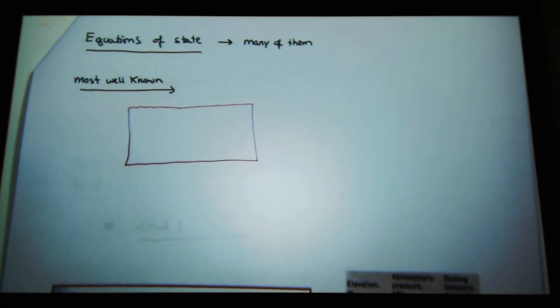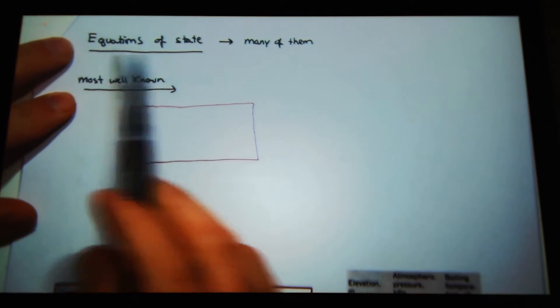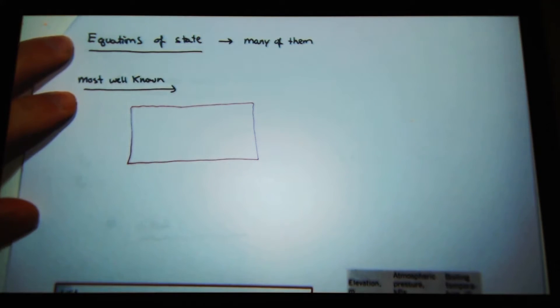The first law of thermodynamics starts off with the very first sentence: there is an equation of state to the system. So right here there's equations of state. It's just an equation that describes the state of a system.